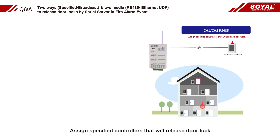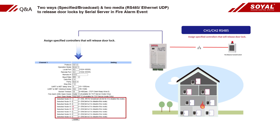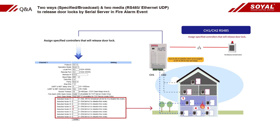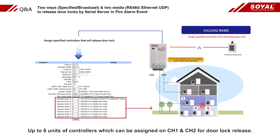Assign the specified controllers that will release door locks. Fill in the node ID of specified released controllers in the select node ID field of 727CN, channel 1 and channel 2. Up to 8 units of controllers can be assigned on channel 1 and channel 2 for door lock release.